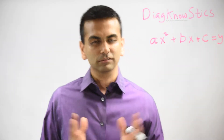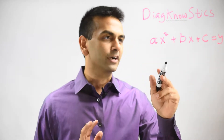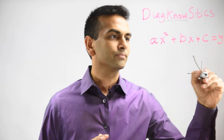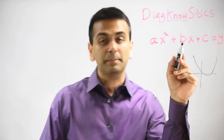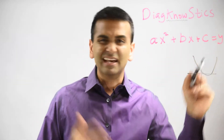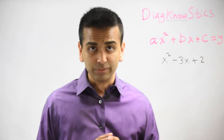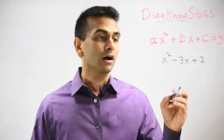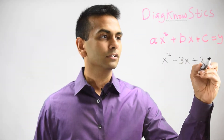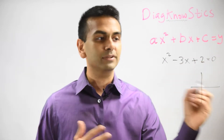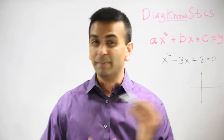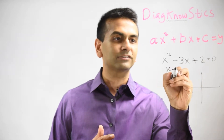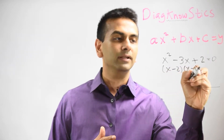Now let's talk about parabolas. Quadratic functions have a second-degree power and look like a U-shape. A common task is to find the zeros, roots, or x-intercepts of a quadratic equation — you set it equal to zero and solve for x. The best way, if possible, is to factor. For example, x squared minus 3x plus 2 factors as (x minus 2)(x minus 1) equals 0, giving x equals 2 or x equals 1.